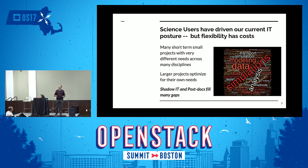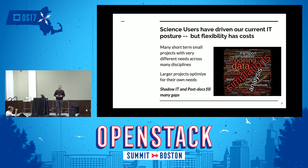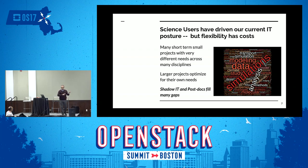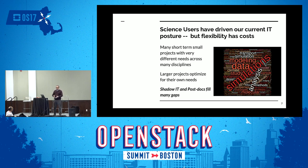We have tons of short-term projects all doing their own thing. The larger projects optimize for their own needs and deploy their own shadow IT. We have different facilities with compute racks we don't touch. We have no idea what the total compute capability at the National Lab currently is. What that means is shadow IT and really postdocs are filling many gaps — and that's actually terrible.